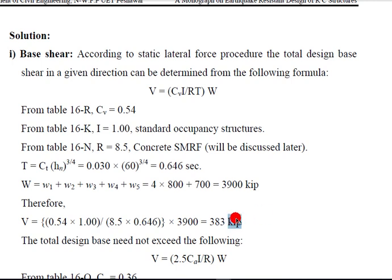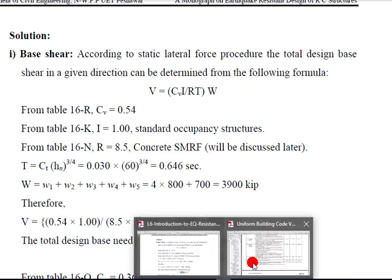So it is the base shear. Now we can check our base shear, the lower limit and upper limit. So our design value must not exceed from this equation. In this equation you can see there is another coefficient which is CA, also called seismic coefficient, and we can take it from the table.